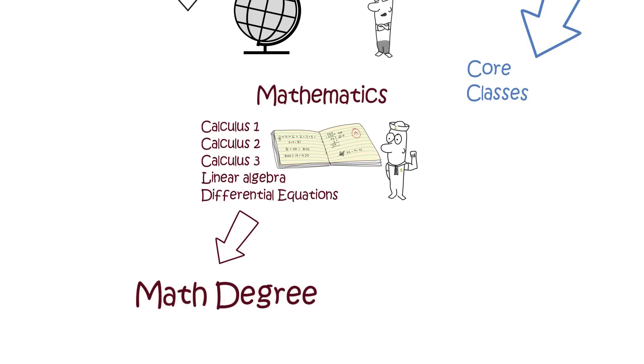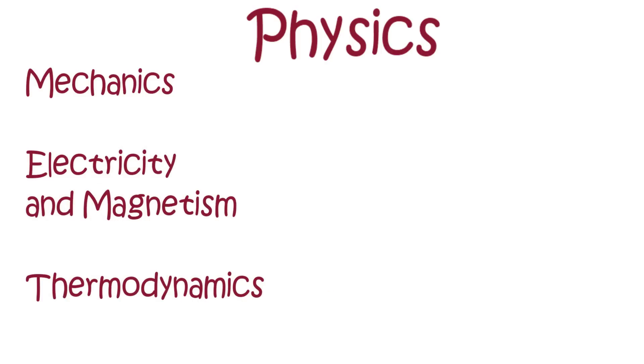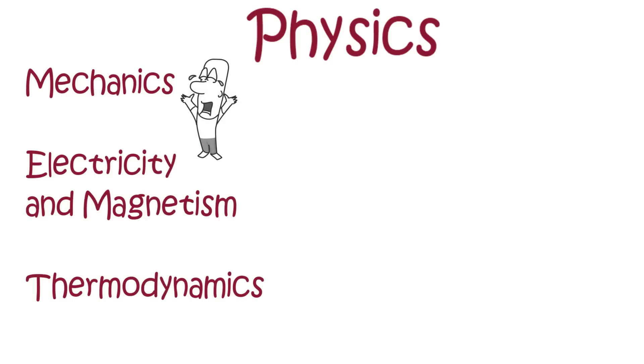After you complete some of your math courses the next set of classes that you will take will be a minimum of 3 physics classes. Mechanics, electricity and magnetism, and thermodynamics. These classes will be calculus based. So some of the concepts that you will learn in math class will be applied here. These classes will also introduce some of the engineering concepts at a very theoretical level.